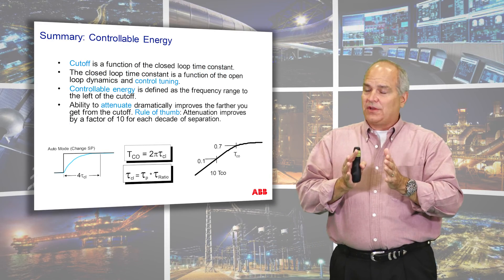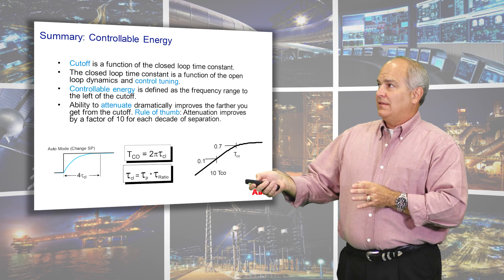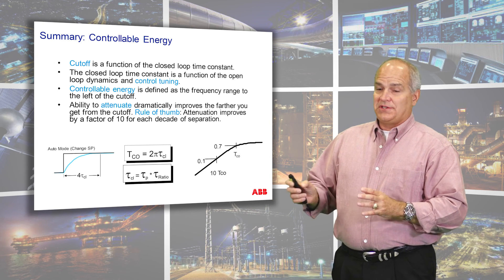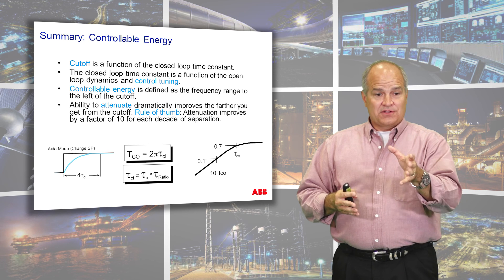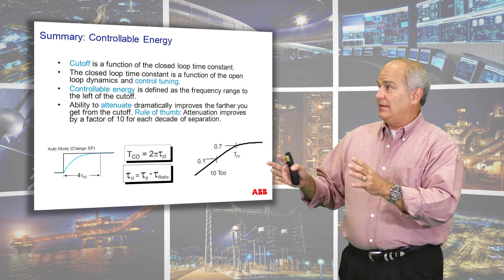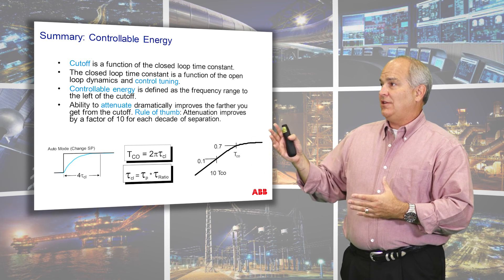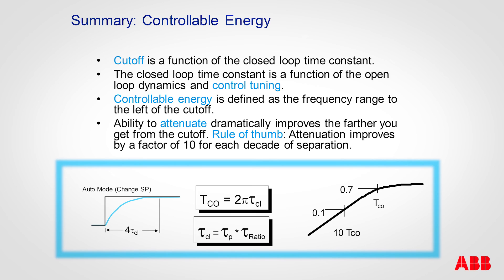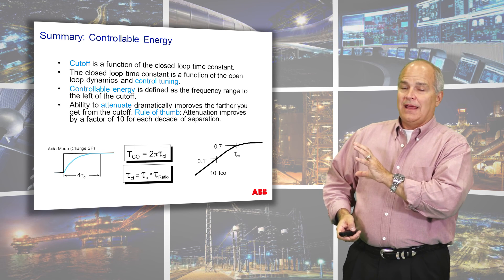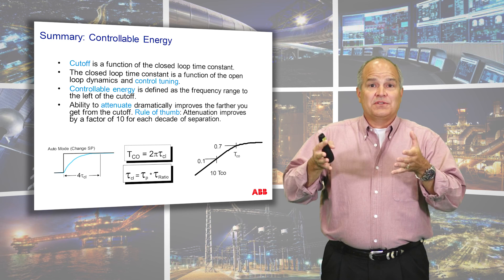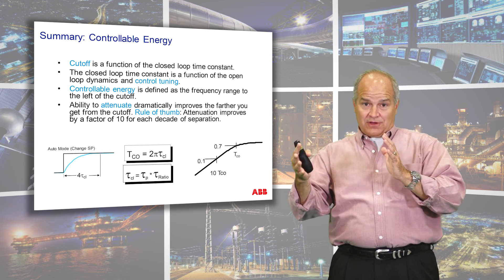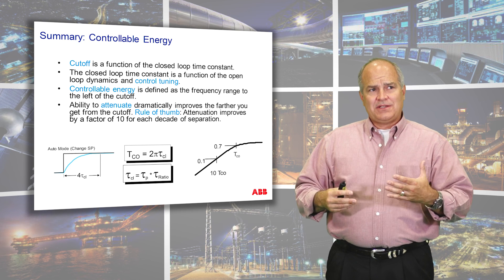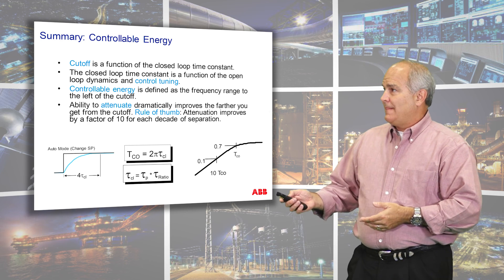The summary here: the cutoff is a function of the closed loop time constant, and the closed loop time constant is a function of the open loop dynamics. You start with a process like the tank level — how much volume do I have? Then you look at the controllable energy and where this controller is designed to operate, which is a function of your control tuning. Your ability to attenuate is dramatically improved or affected by how you tune that. Attenuation tends to improve by a factor of 10 as you move a decade away. That was a quick summary on why we're interested in frequency content: our control is designed for a frequency band. If you know how you tuned your loop, you can know how it's going to respond. But the question is, how do I know what frequencies are coming into my process? And that's what we're looking at here.